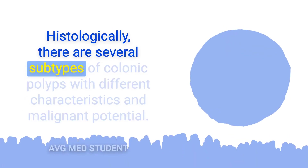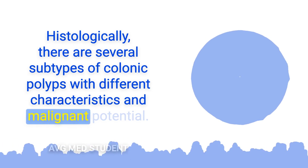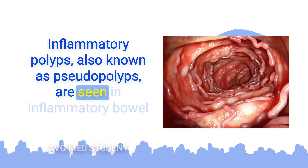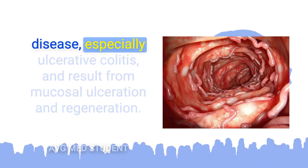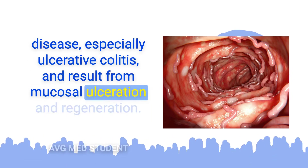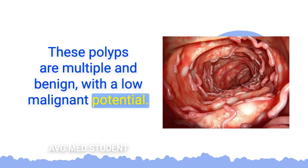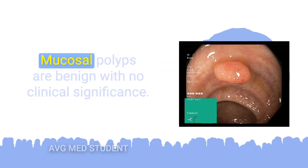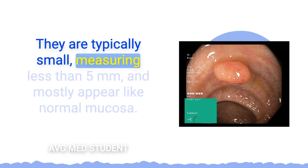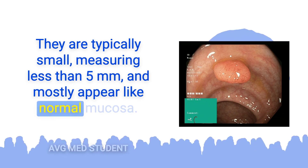Histologically, there are several subtypes of colonic polyps with different characteristics and malignant potential. Inflammatory polyps, also known as pseudopolyps, are seen in inflammatory bowel disease, especially ulcerative colitis, and result from mucosal ulceration and regeneration. These polyps are multiple and benign with a low malignant potential. Mucosal polyps are benign with no clinical significance; they are typically small, measuring less than 5 mm, and mostly appear like normal mucosa.